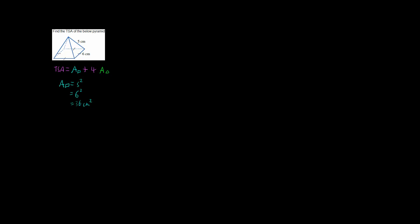Let's start with the square because it's going to be nice and easy. The area of the square is side squared, so we have 6 squared, which is 36 centimeters squared. So the area of our square base is 36 centimeters squared.